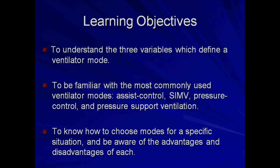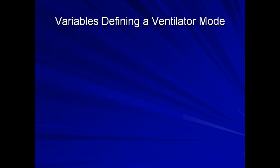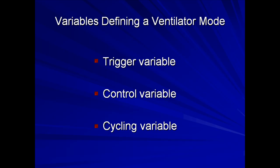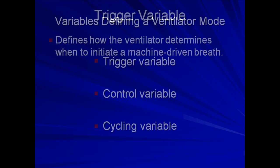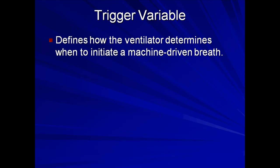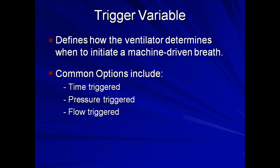Patterns of ventilation, also known as ventilator modes, can be partially defined based on the following three variables: the trigger variable, the control variable, and the cycling variable. The trigger variable defines how the ventilator determines when to initiate a machine driven breath. For patients with no spontaneous respirations, the passage of a specific duration of time is a trigger for a breath.